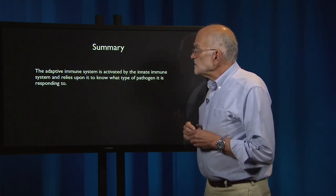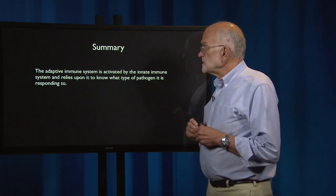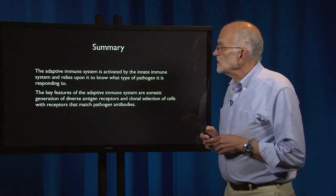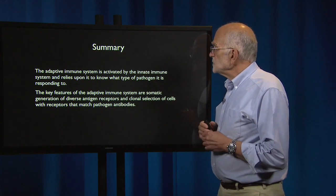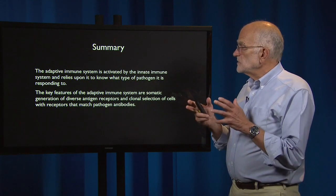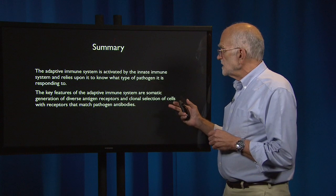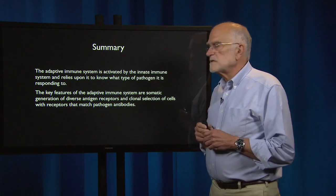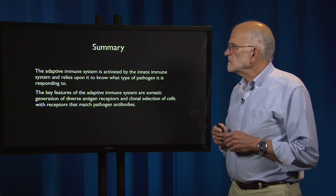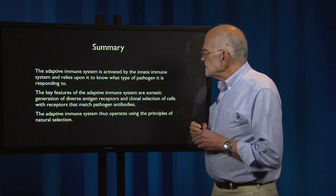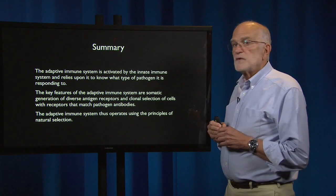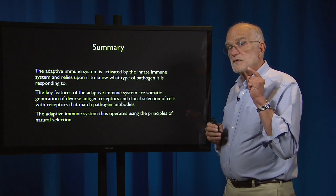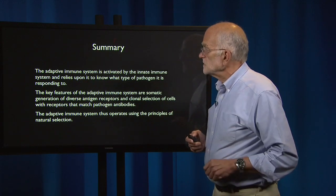The adaptive immune system is activated by the innate immune system and relies upon it to know what type of pathogen it is responding to. Its key features are somatic generation of diverse antigen receptors and clonal selection of cells with receptors that match pathogen antigens. The adaptive immune system thus operates using the principle of natural selection, selecting clones to respond to specific antigen signals.